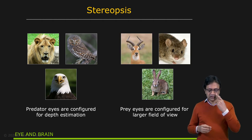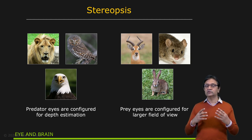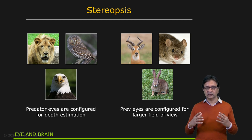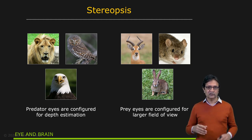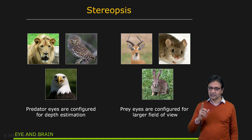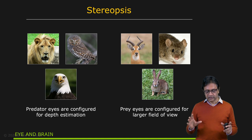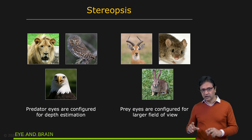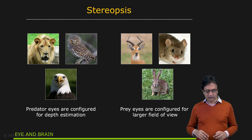In contrast, when you look at prey, although they have two eyes, very often these two eyes don't overlap substantially in terms of field of view. The two eyes are being used to generate a wider field of view so that they can detect predators who are on the hunt. So different purposes — depth perception for predators, wider awareness for prey.